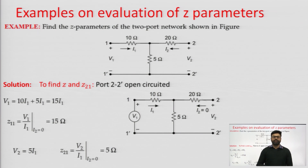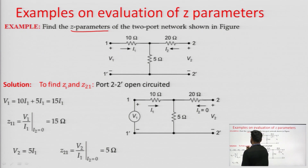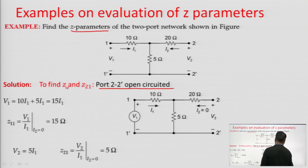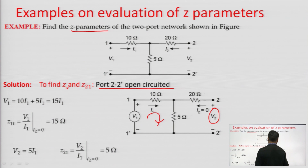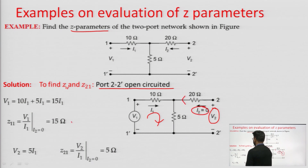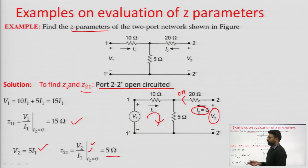Now we will see some examples on evaluation of Z parameters. In the first example, to find Z11 and Z21 we open circuit port 2. With I2 = 0, applying KVL: V1 = 10·I1 + 5·I1, so Z11 = 15 Ω. For Z21, since no current comes from the open port, V2 = 5·I1, so Z21 = V2/I1 = 5 Ω.